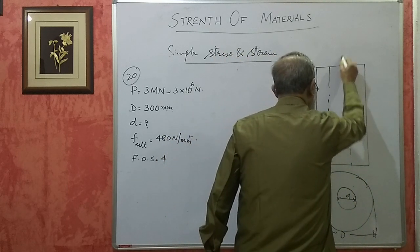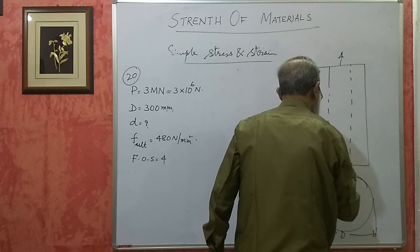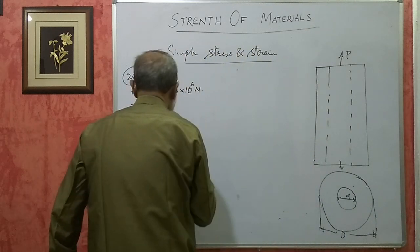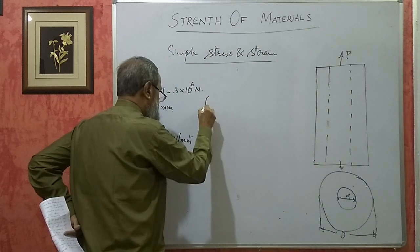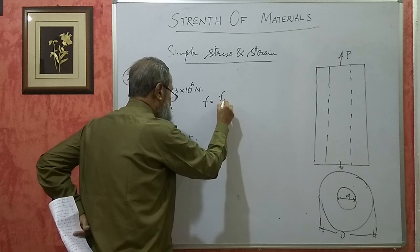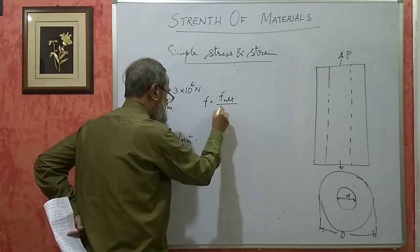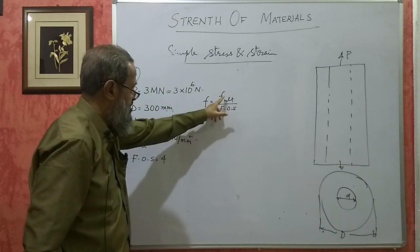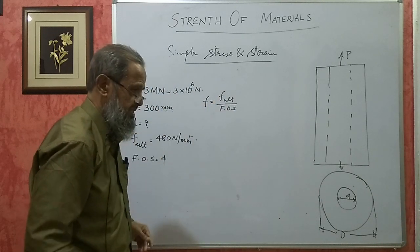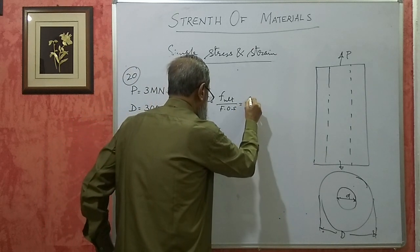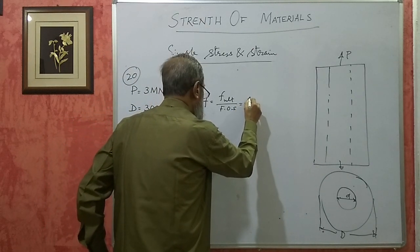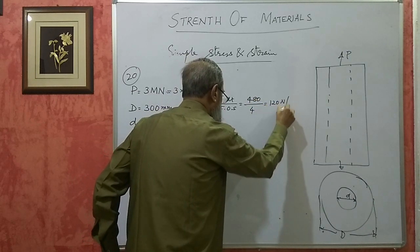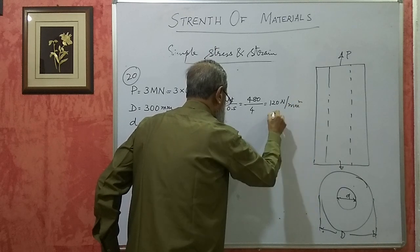He has given what load is applied. Now, we will find out the allowable stress. Allowable stress will be ultimate stress divided by factor of safety, because factor of safety is the ratio of ultimate stress to working stress. Ultimate stress is 480 divided by 4. This works out to 120 newton per mm square. This is the allowable stress.